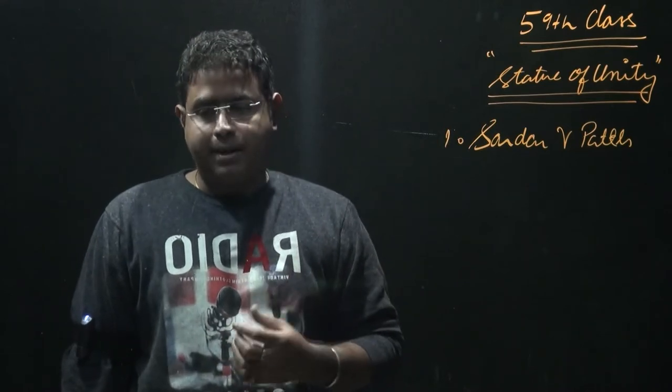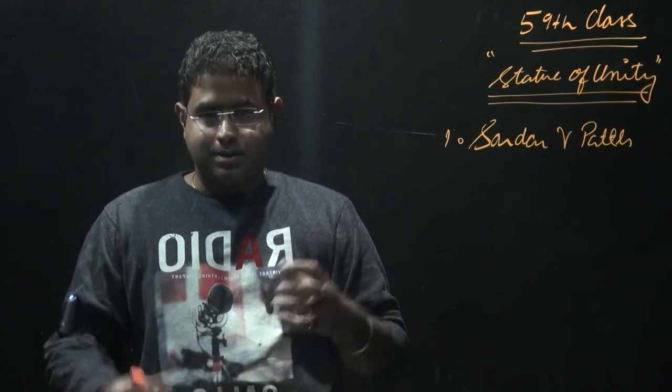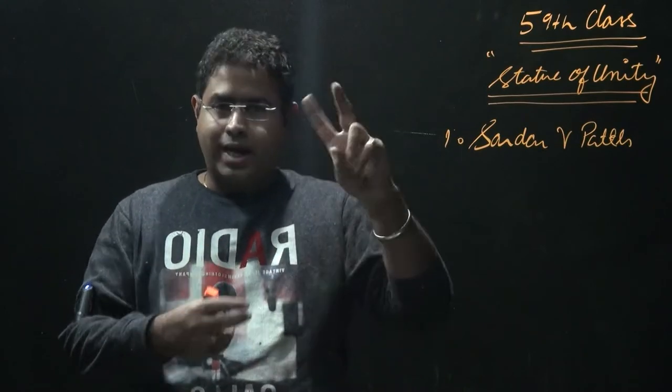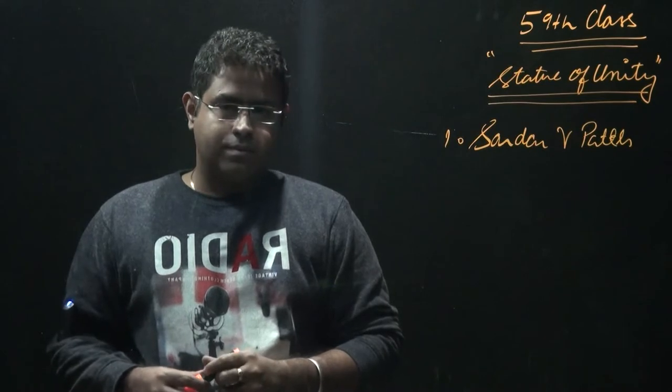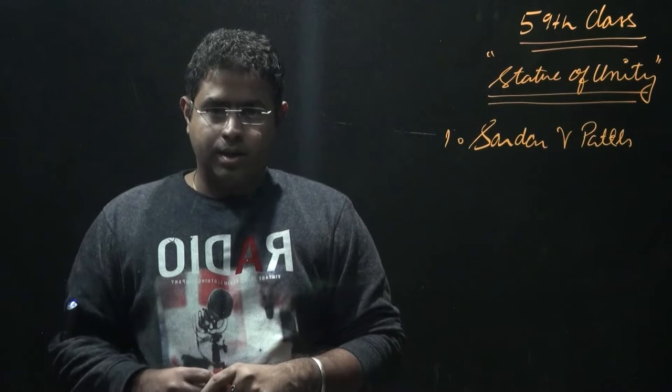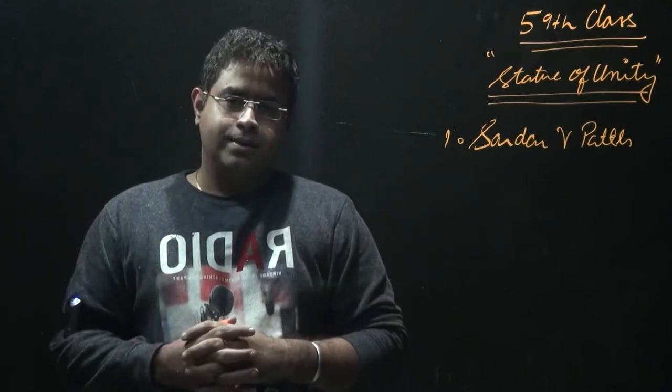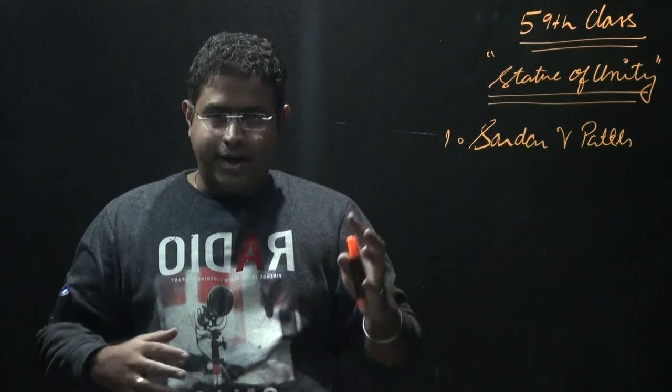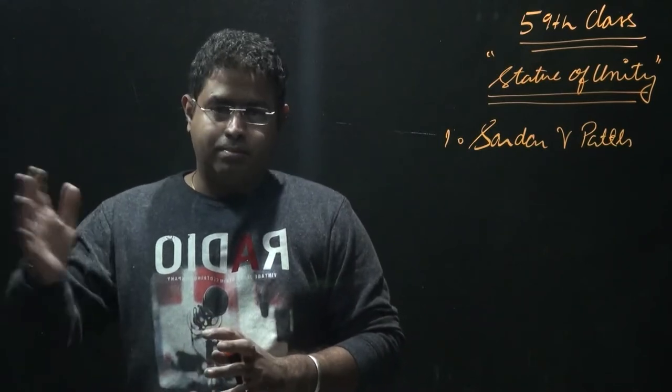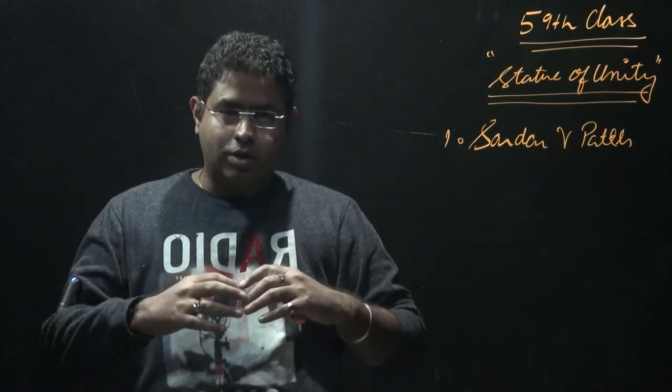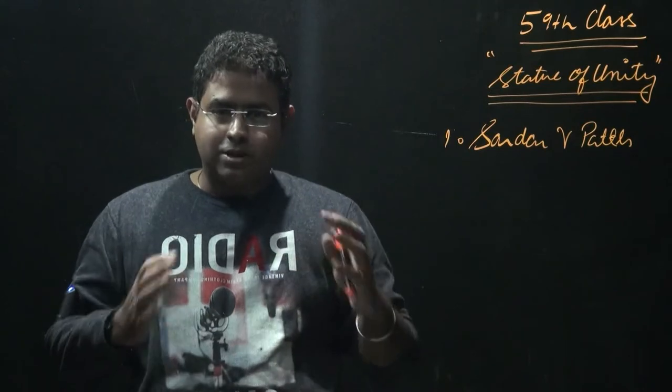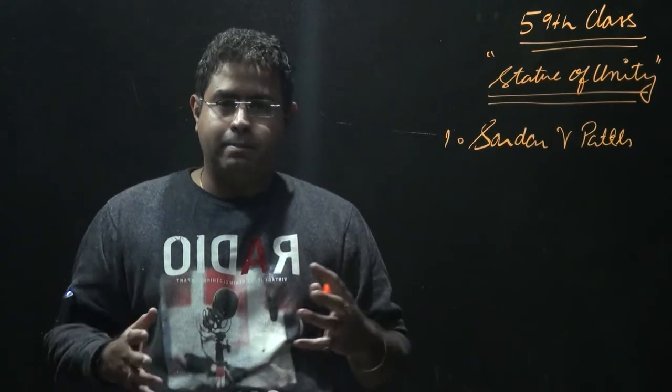What is the background? When India got its independence, we had two problems. The first problem was the problem of partition. There was lot of bloodshed, there was lot of turmoil that unfolded along with the independence. The second important thing was that when India got its independence, along with that 500 plus princely states had also got its independence.